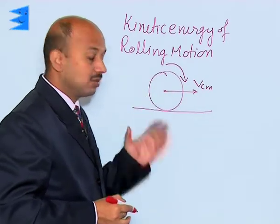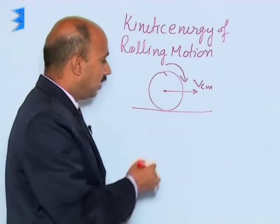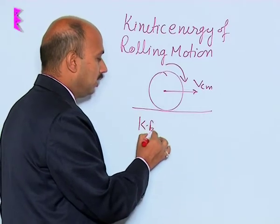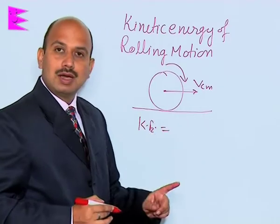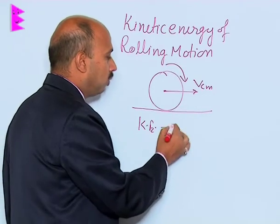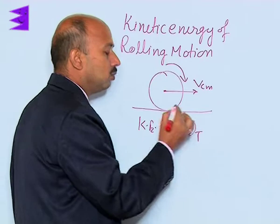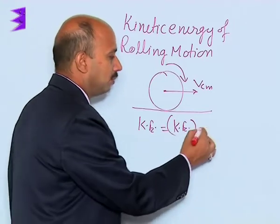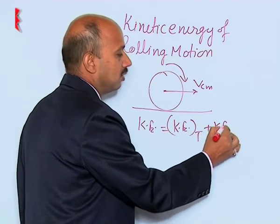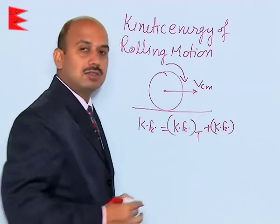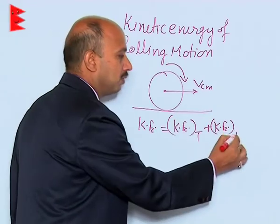It means the center of mass has velocity v_cm. The body has rolling motion, which means it has translational motion. In that case you can write the total kinetic energy of the body as kinetic energy due to translational motion of the center of mass plus kinetic energy of rotational motion about the center of mass.